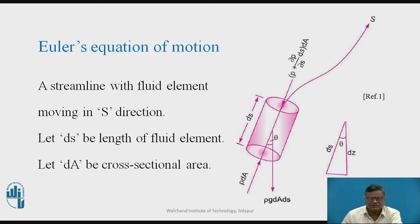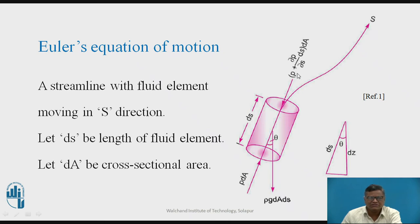Here we consider the different forces acting on this fluid element. On the left-hand side, the pressure force is p·dA acting on that surface. Moving to the other side of the element, there is variation in pressure. The rate of variation is ∂p/∂s, and the distance moved is dS, so the change in pressure is (∂p/∂s)·dS. The total pressure on the other face is (p + (∂p/∂s)·dS)·dA.